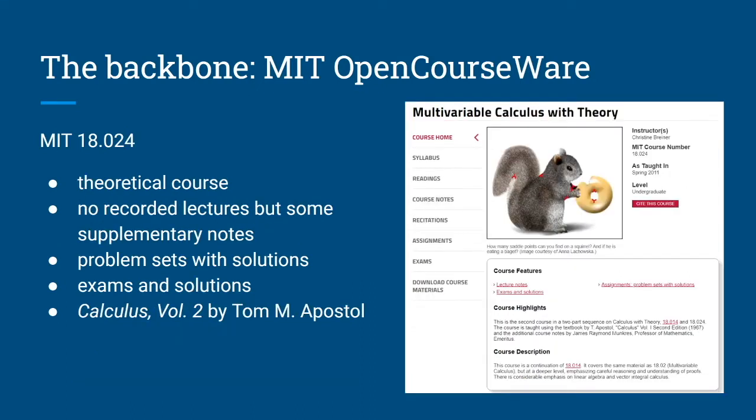If you want to take a theoretical course in multivariable calculus, I would recommend MIT's 18.024. This is actually the course I did when I took my multivariable calculus as a self-study. This is a theoretical course, which means that the emphasis is on proof. There are no recorded lectures, but there are supplementary notes written by emeritus professor at MIT, James Munkrus.